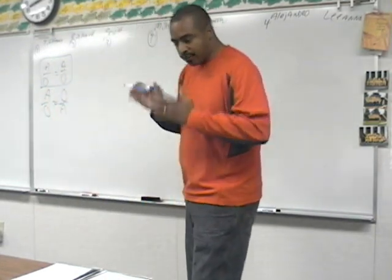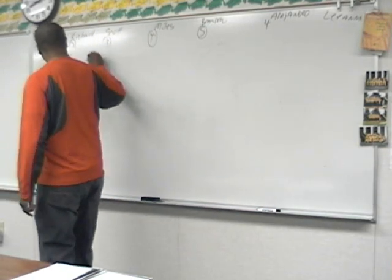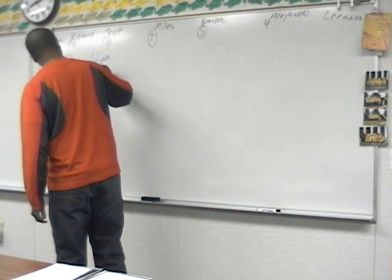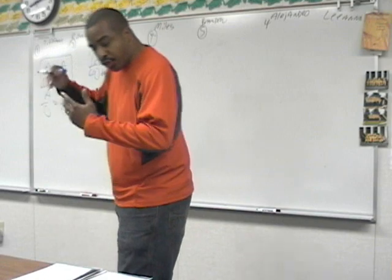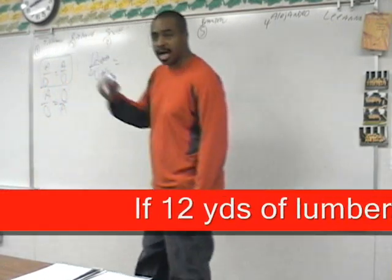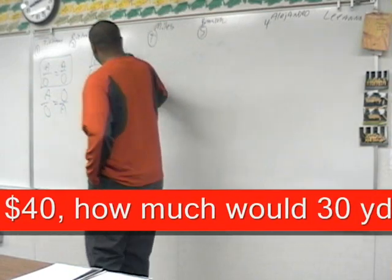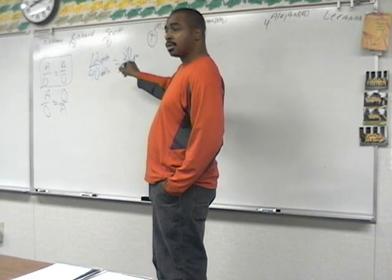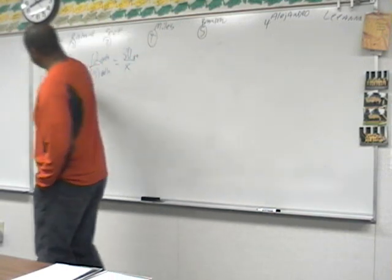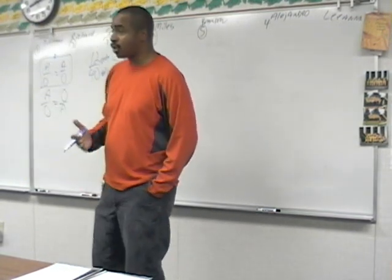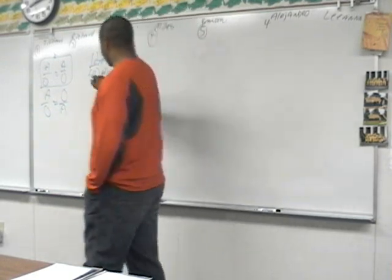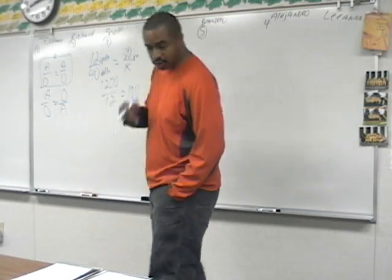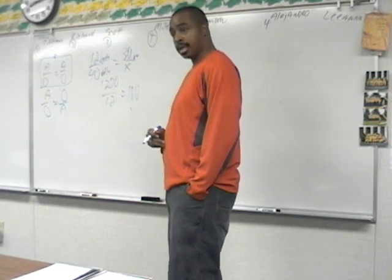If 12 yards of lumber costs $40 — that's 12 yards to $40, yards on top and dollars on the bottom — how much do 30 yards of lumber cost? Where am I going to put the 30? On top, because I have to have yards to dollars, yards to unknown dollars. If I put the 30 on the bottom, the problem is busted. So: 40 times 30 is 1200, divided by 12 is 100. It will be $100 for 30 yards of lumber. Proportional.